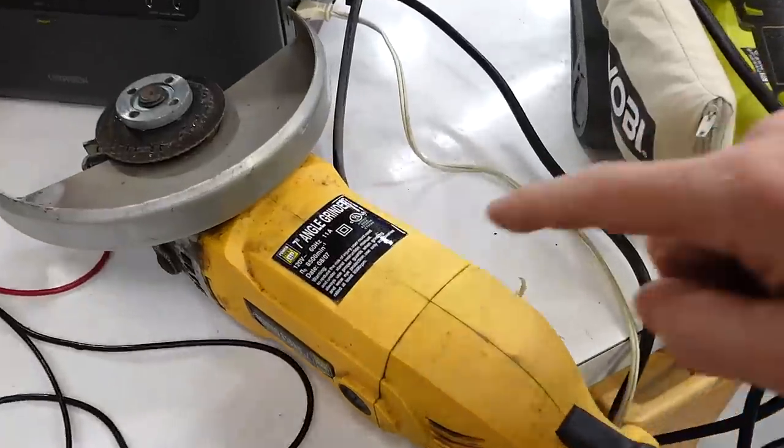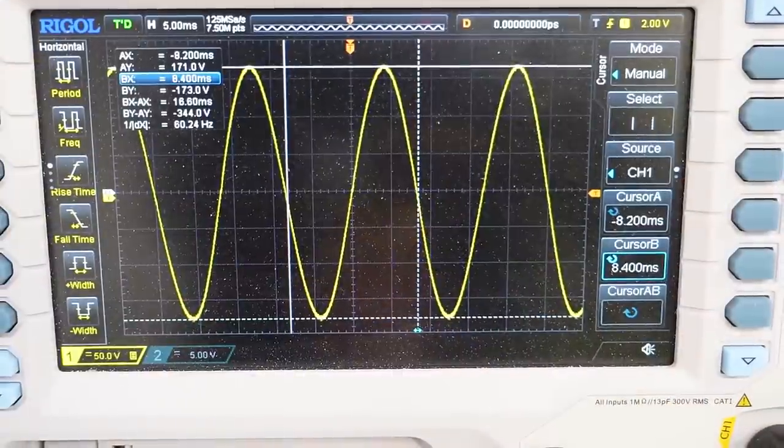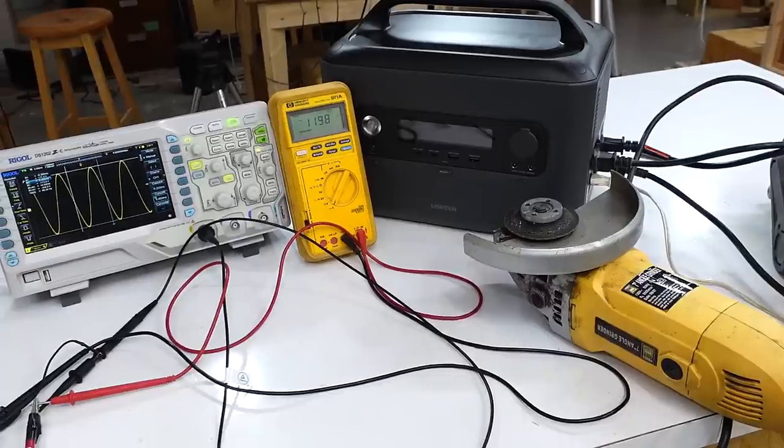This big angle grinder is rated for 11 amperes and it was able to just barely get it up to speed so I think that's right at the limit.